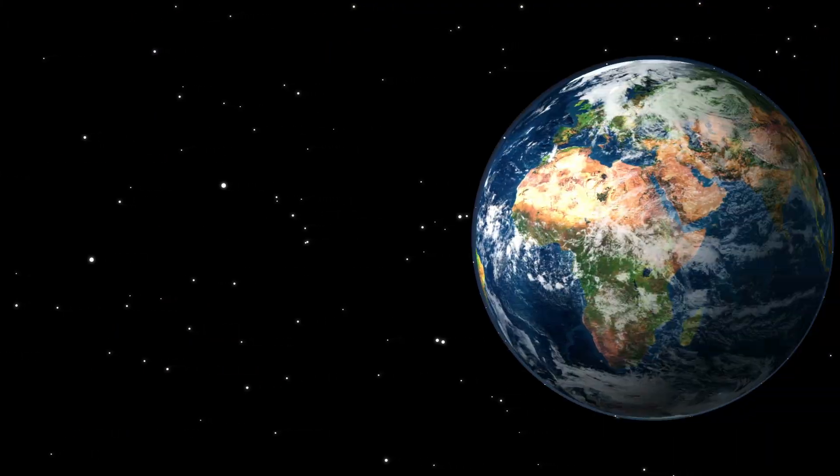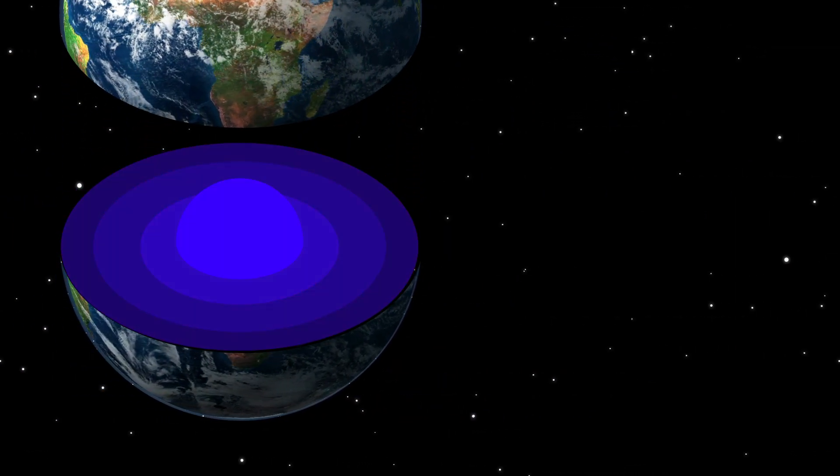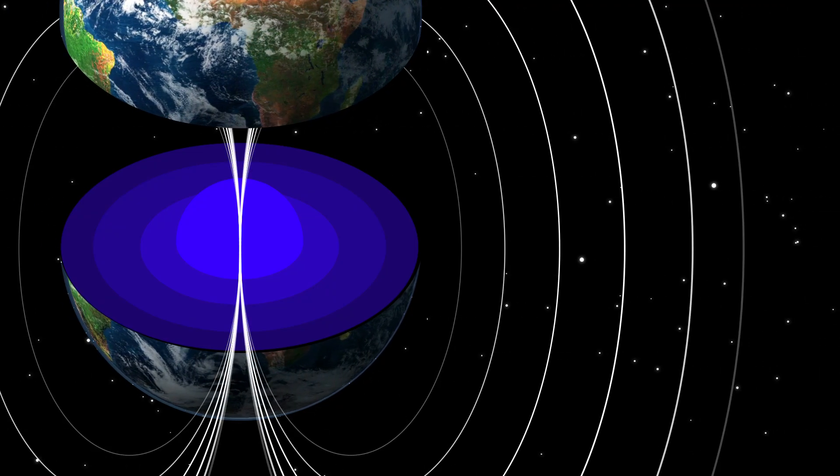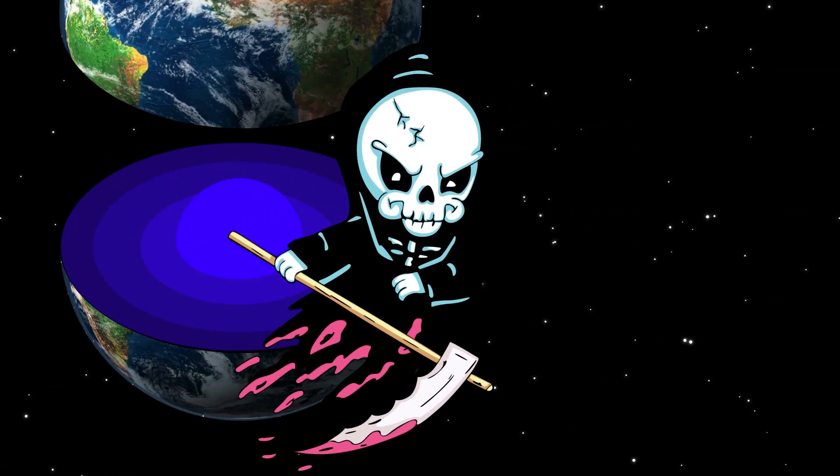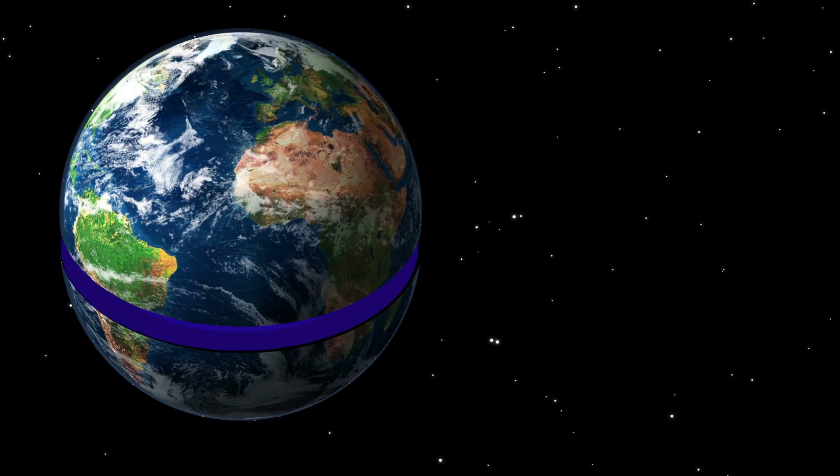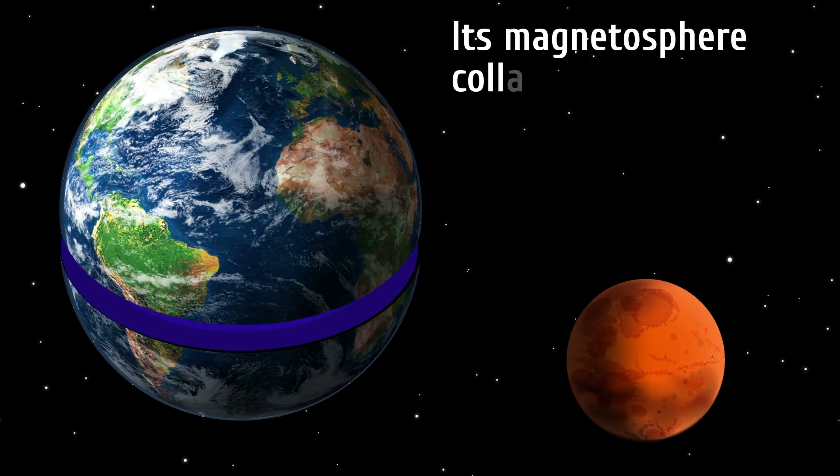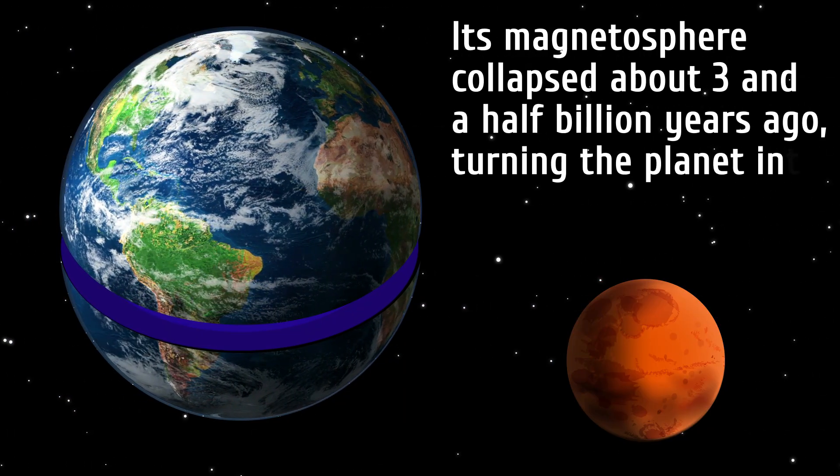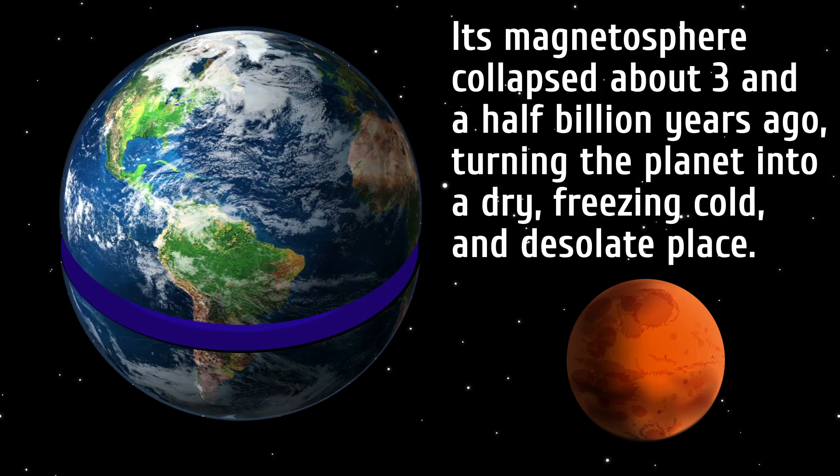Freezing of the Earth's core. In three or four billion years, the Earth's molten liquid core may solidify. In this case, the planet will lose its magnetic field and, consequently, its atmosphere. This will certainly lead to the demise of all forms of life on our planet. Scientists believe this is probably what happened to Mars. Its magnetosphere collapsed about three and a half billion years ago, turning the planet into a dry, freezing cold, and desolate place. With no Airbnbs.